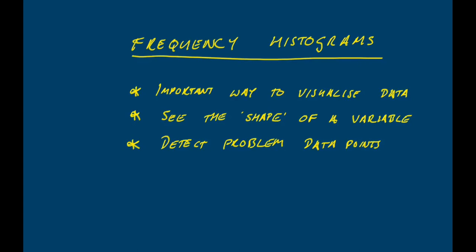You'll also be able to detect any really problematic data points. If you have a data point that's been measured incorrectly and is 10,000 times the value of all the other data points, you're going to see that in a frequency histogram. It's not a foolproof way of detecting problems but it will show you some of the more serious problems before you have to deal with them in your statistical analysis.